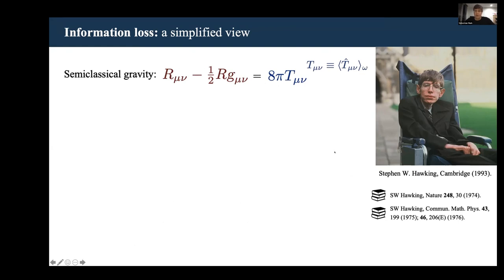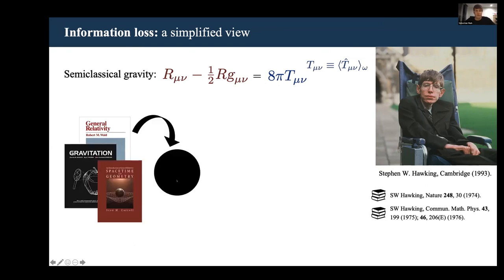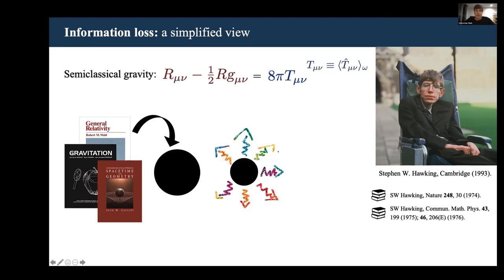In a very simplified view, you can think of it like this: imagine that you have a bunch of things falling into a black hole, maybe your favorite gravity textbooks. Now imagine the black hole evaporates, and if it evaporates completely, all that you're left with is the radiation emitted in this evaporation process.